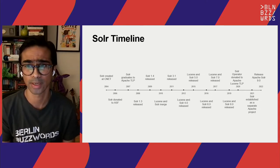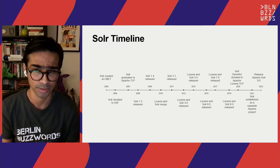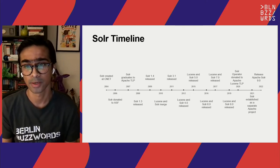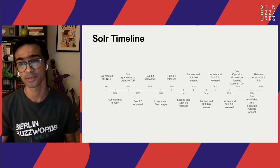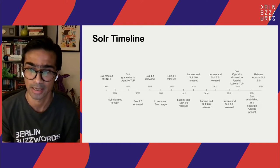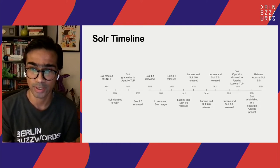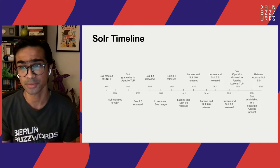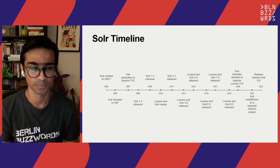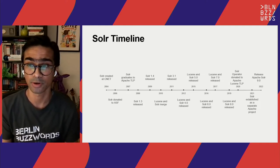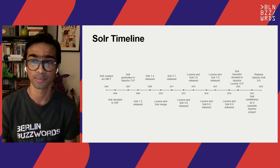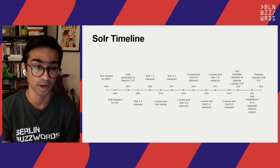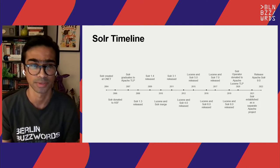Until about 2020, when a conversation started in the community about separating these projects into their own independent top-level projects at Apache — basically establishing Solr as an independent project again. In early 2021, we saw Solr being established as a separate Apache project. That makes Solr 9.0 an important release in the sense that it's the first release of Apache Solr as an independent project, not released as part of the Apache Lucene project.